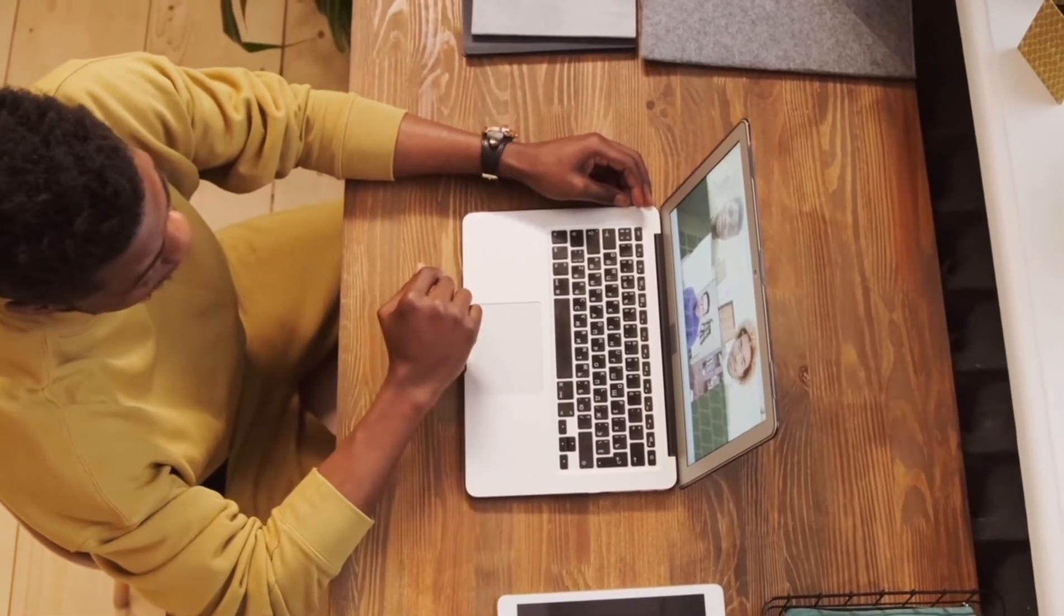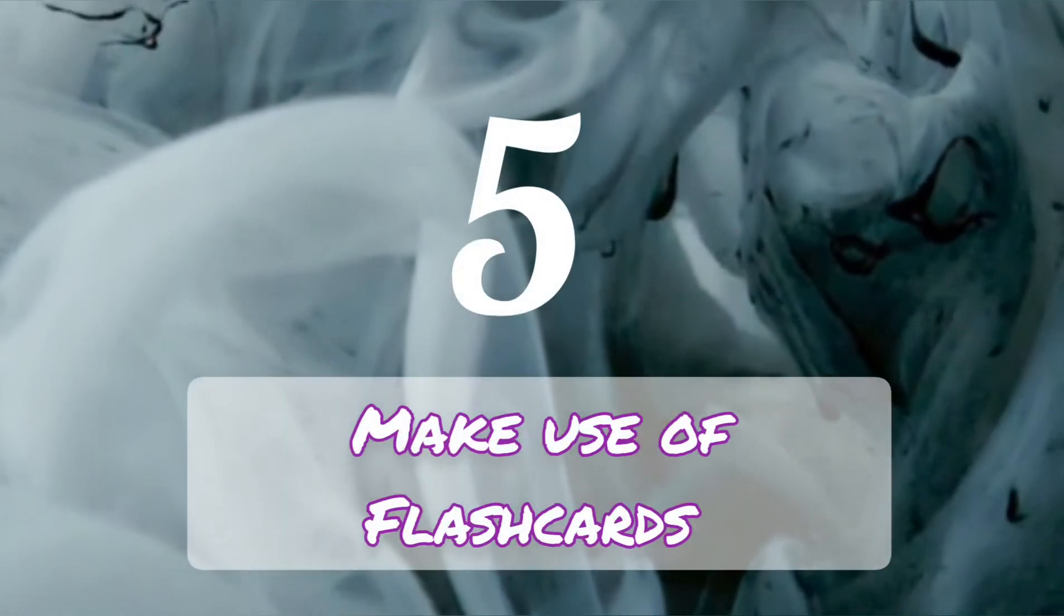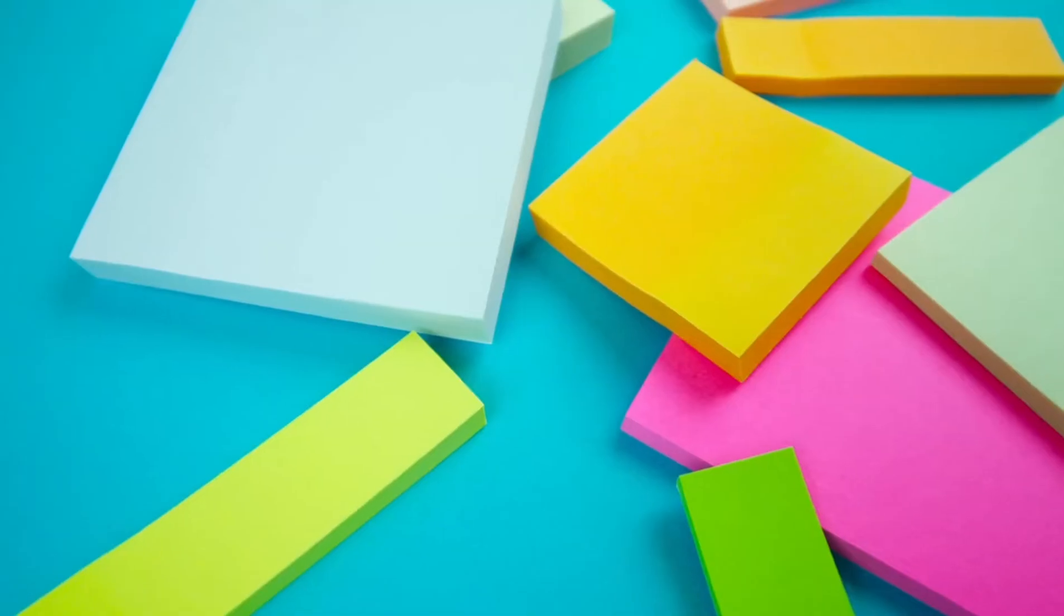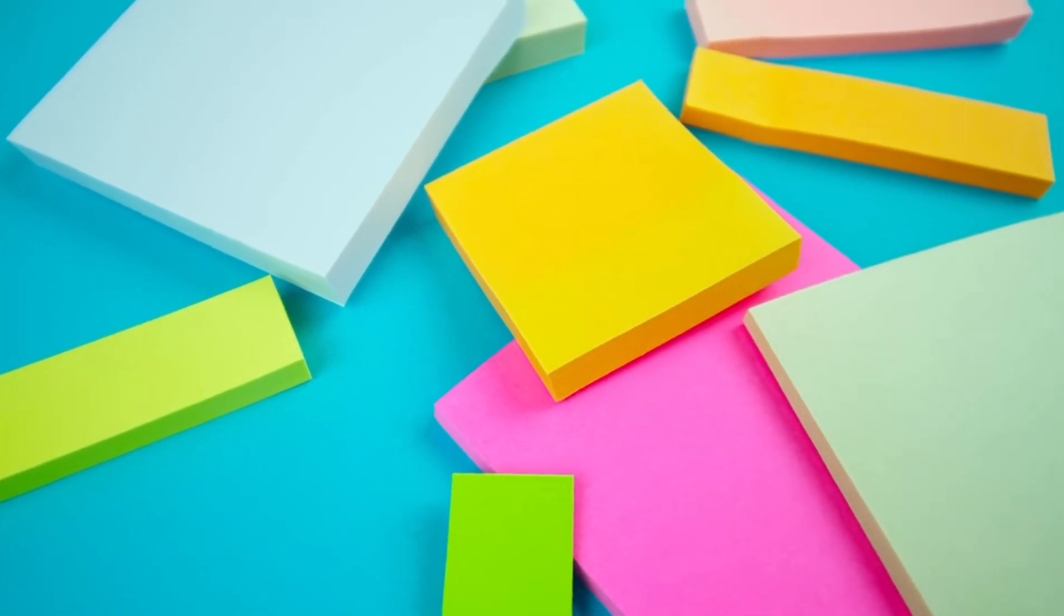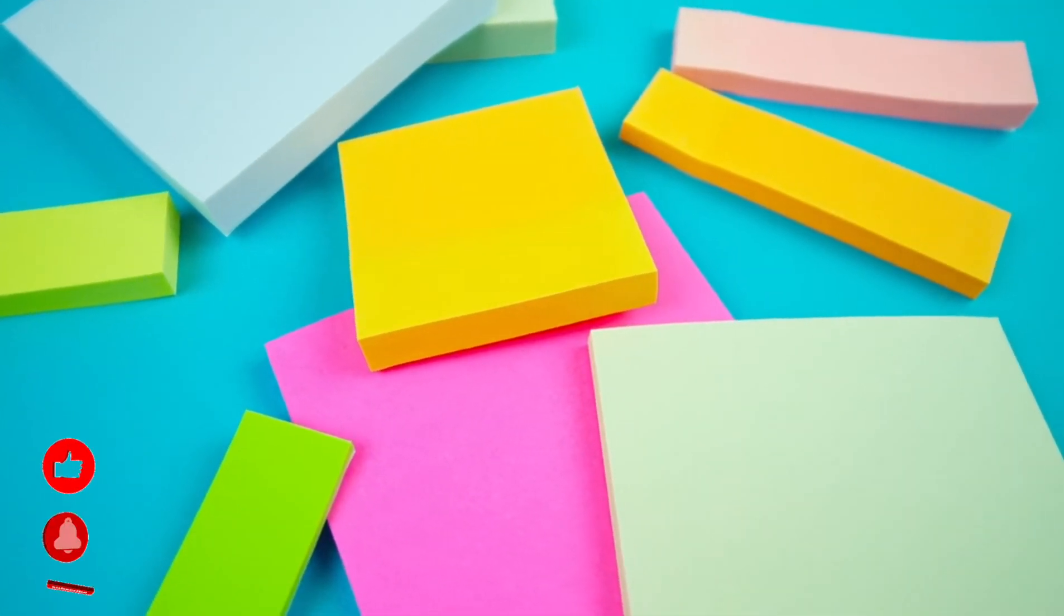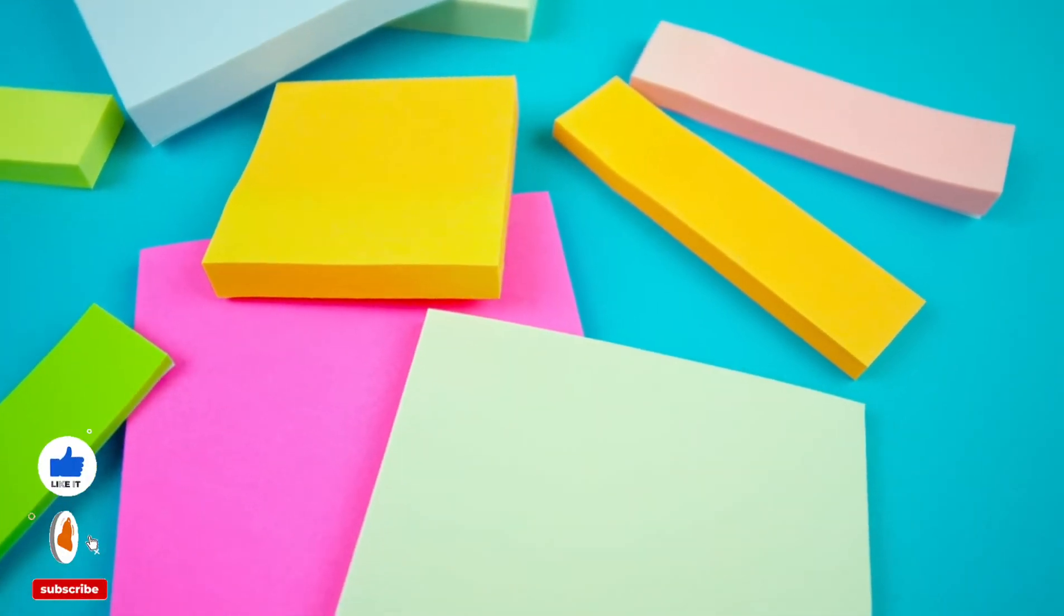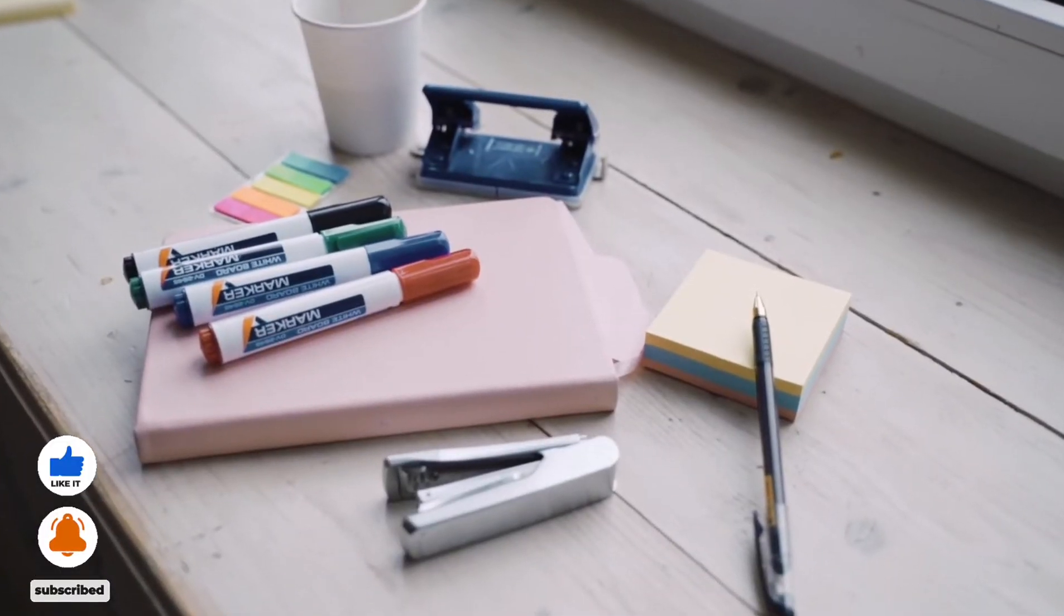Tip number five: make use of flashcards. Flashcards are effective for learning biology when it comes to memorization of terms. Write down the terms and concepts you're trying to memorize on one side of a 3x5 card, and their definitions and descriptions on the other side.